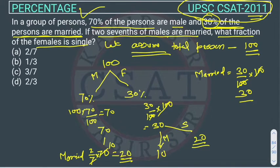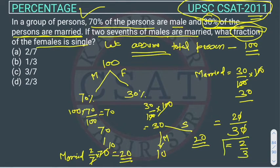Now the question is asking the fraction of the females that is single. The fraction will be how many females are single, which is 20, divided by the total number of females, which is 30. So the ratio is 2 by 3. This is our answer.